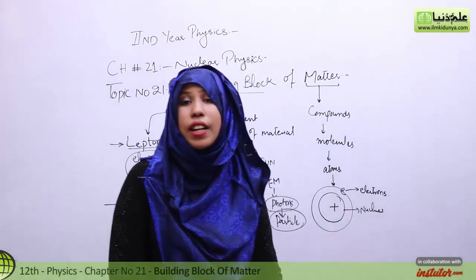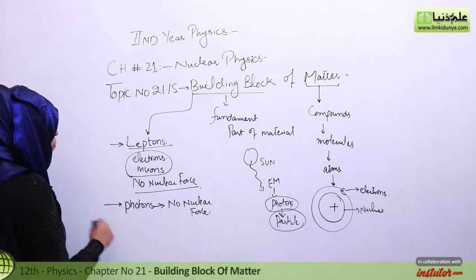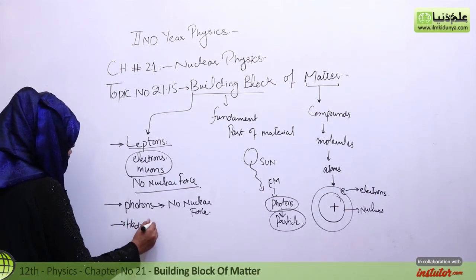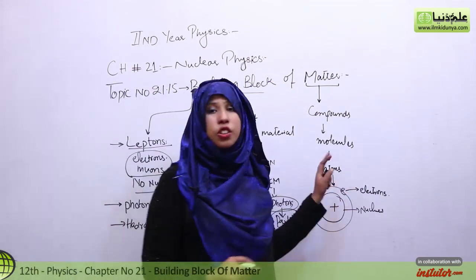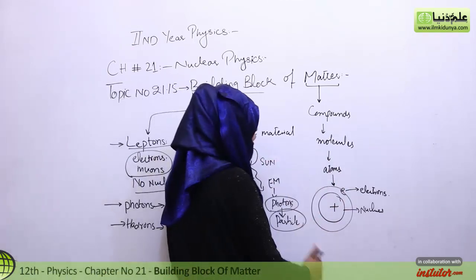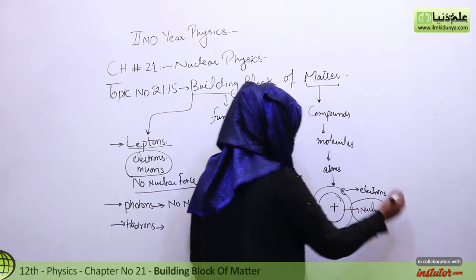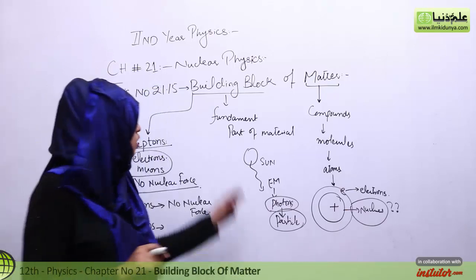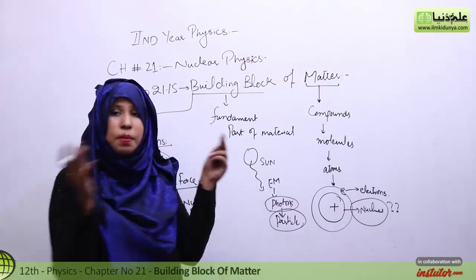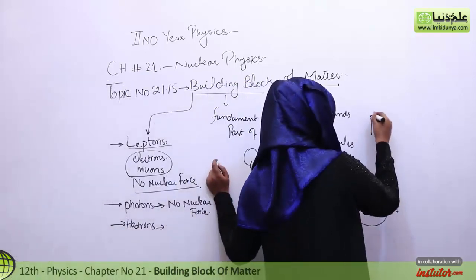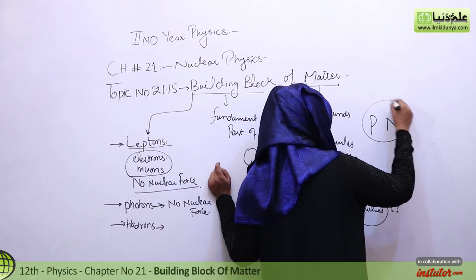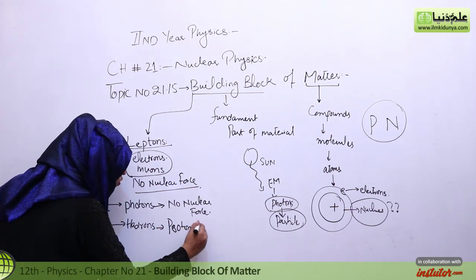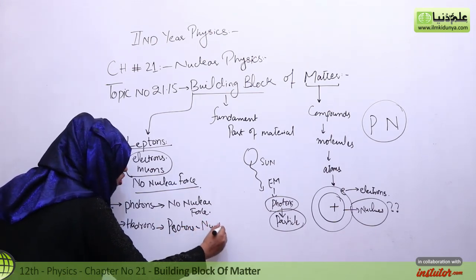Besides leptons, students, we have another category called Hadrons. The electrons we placed in the lepton category. Now let's go to the nucleus. The question is: is our nucleus a fundamental particle? No, it is not a building block — it can be opened from the inside. When we open the nucleus, we get protons and neutrons. These protons and neutrons we give the name Hadrons.